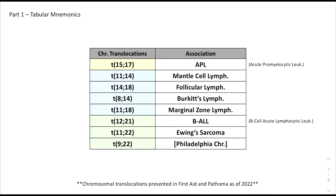For part one, the way we're going to set up this table from scratch is that we're first going to need to convert the chromosomal translocation number pairings into a form that is way easier to recall at exam time. After digging through Pathoma and First Aid, I found that for each association there's essentially one high-yield translocation to know, with a minor exception for B-ALL that I'll get into later. These are the one-to-one chromosome translocation associations we need to know.